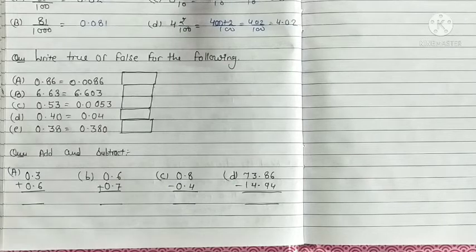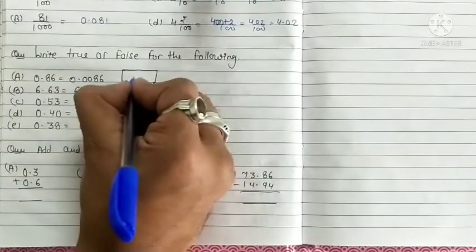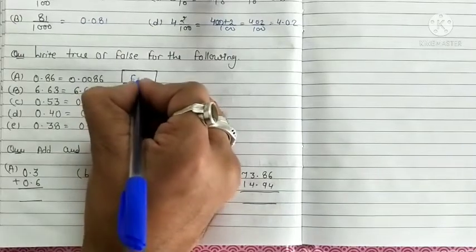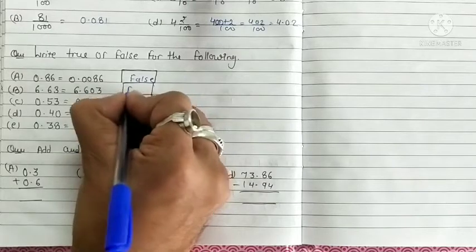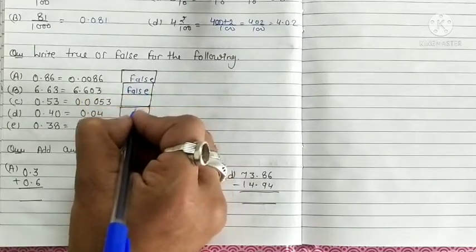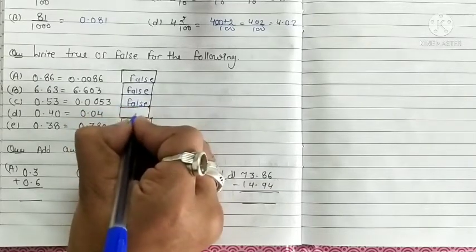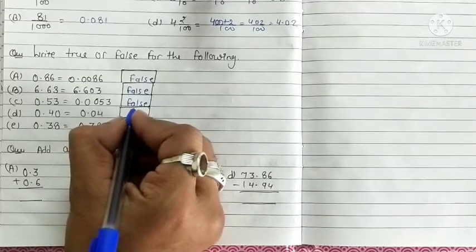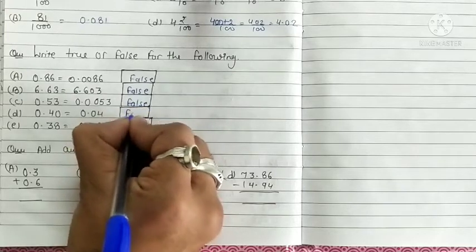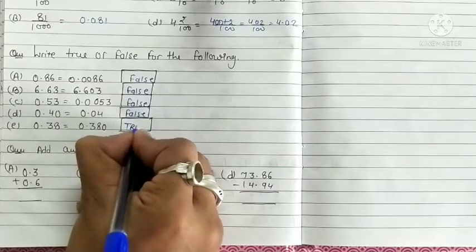Write true or false for the following. First is 0.86 and 0.0086, false. Second 6.63 and 6.603, false. 0.53 and 0.0053, false. 0.40 and 0.04, false. And 0.38 and 0.380, true.